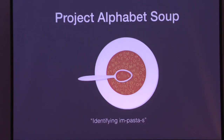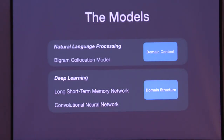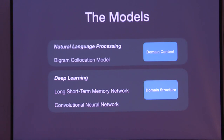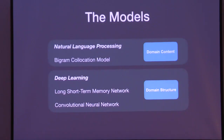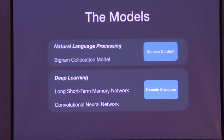Our project is called Alphabet Soup — we're trying to identify the impostors. We had two approaches. One was looking at the content of the domain: do these words make sense? We used a natural language approach using a bigram co-location model. And then we also wanted to look at the structure: is there a difference in the way a random word domain is structured versus a human-made domain? For that we used deep learning — we came up with an ensemble model that uses a long short-term memory network and a convolutional neural net.